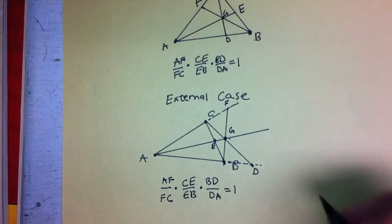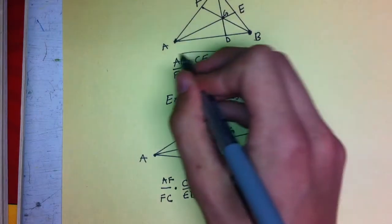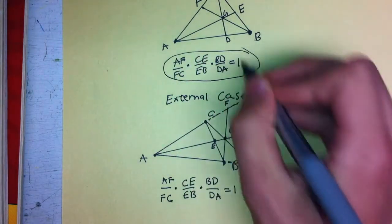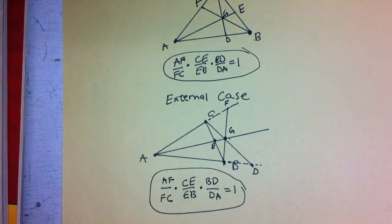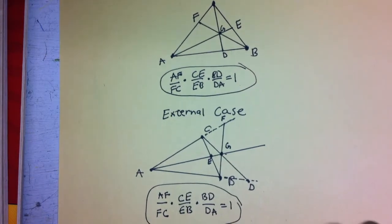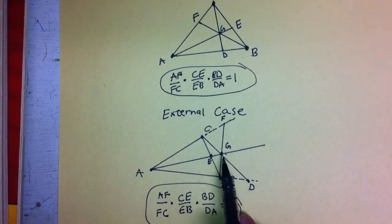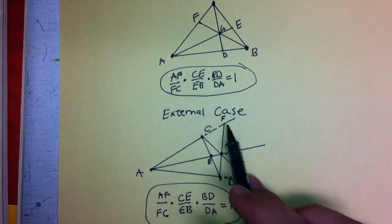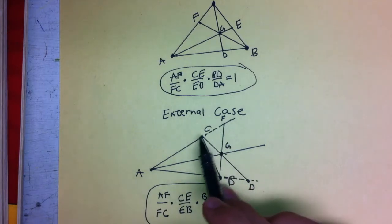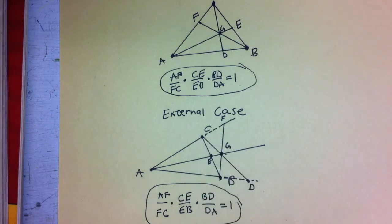If you notice, for the internal case and for the external case, the expressions are both exactly the same for Ceva's Theorem. We just have to remember that in the external case, because the lines intersect outside of the triangle, you have to go from the point to the intersection point and then back to the next vertex of the triangle.